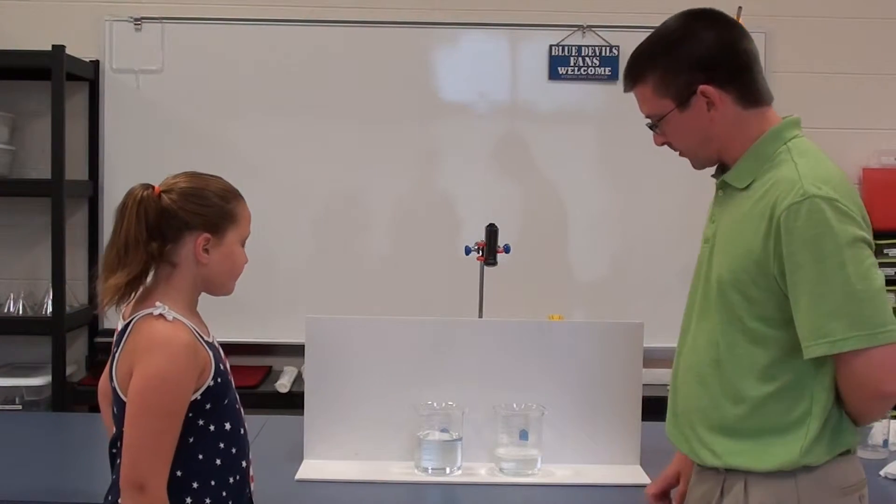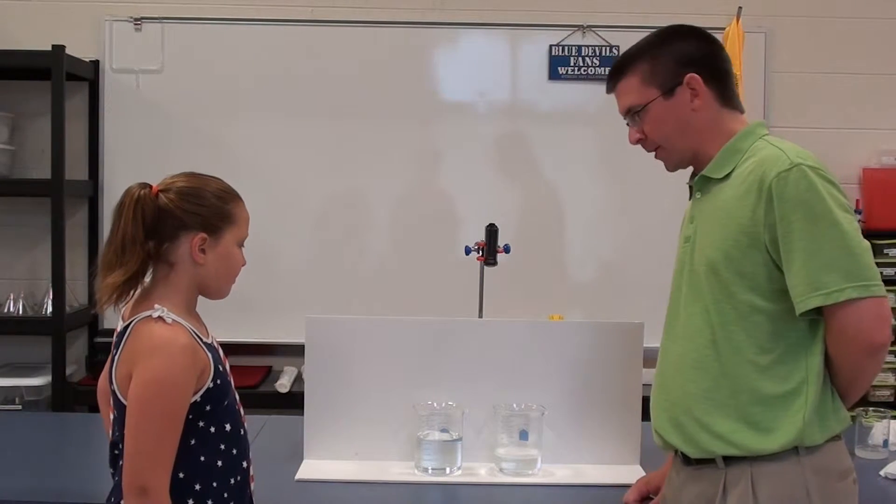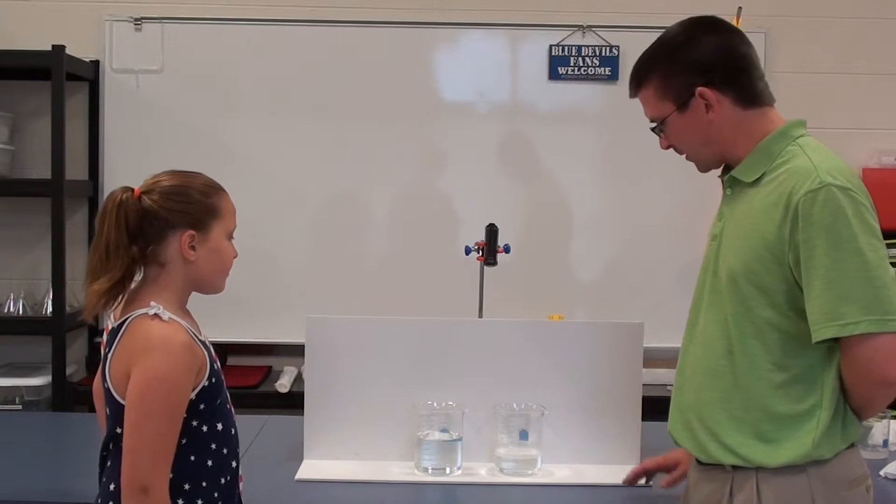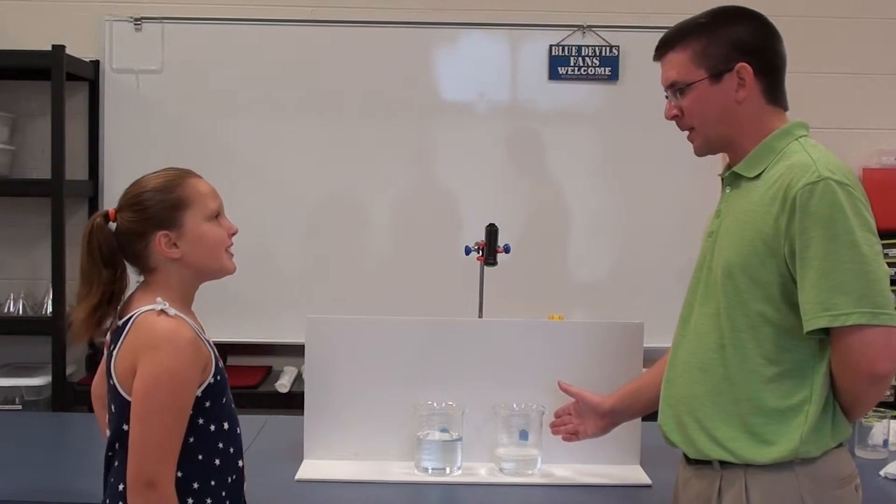And we've got two beakers here. The first one has some vinegar in it, and what do we know about vinegar? It's an acid. And the second one has ammonia, and ammonia is a base.